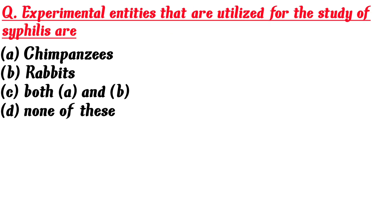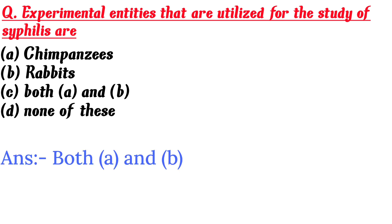Experimental entities that are utilized for the study of syphilis are: A. Chimpanzees, B. Rabbits, C. Both A and B, D. None of these. Answer is C. Both A and B.